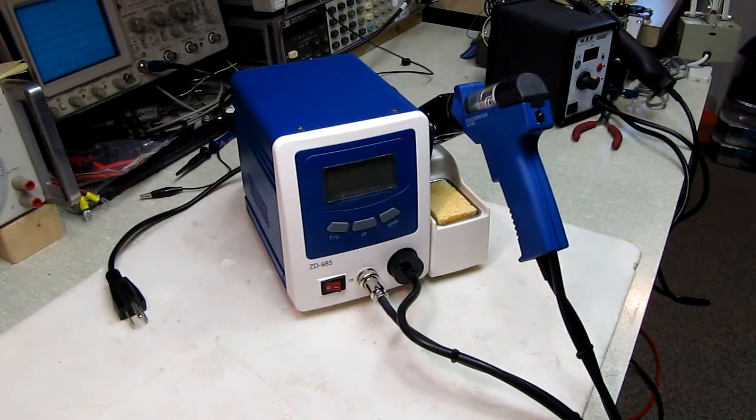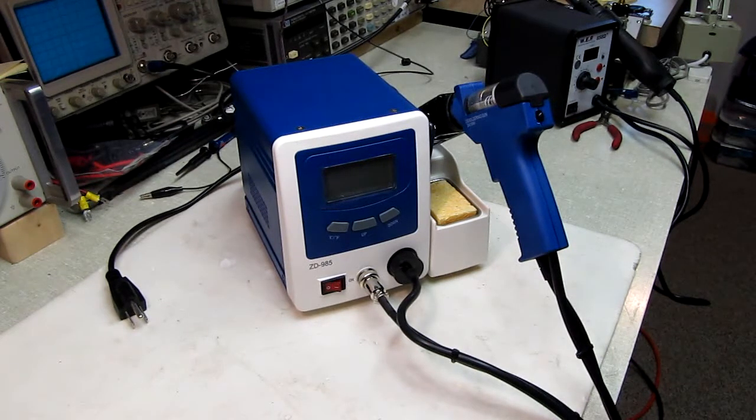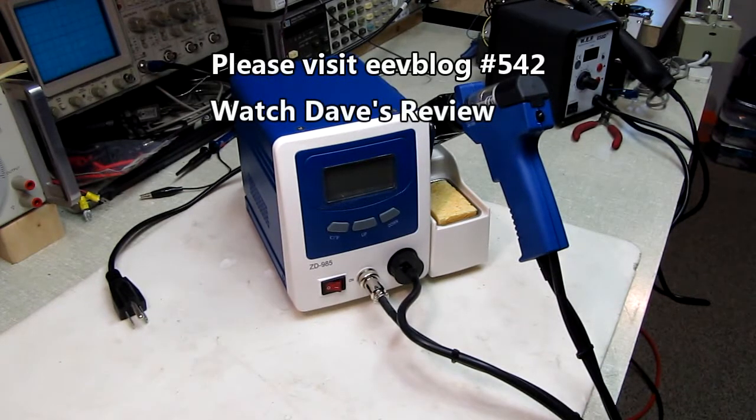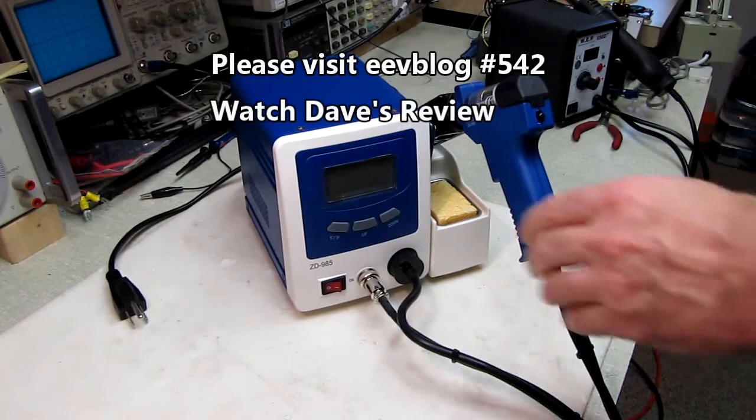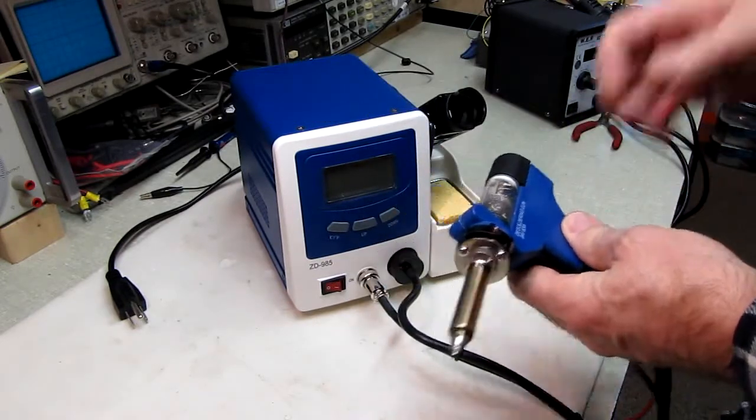Hello and welcome back to the radio mechanic. Today's vlog is just another quick repair tip on a unit that Dave over at the EEV blog reviewed a while back—I believe it was his vlog number 542. It's a solder removal tool or desoldering tool vacuum station.